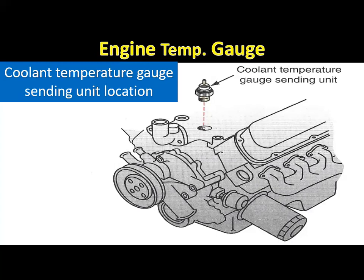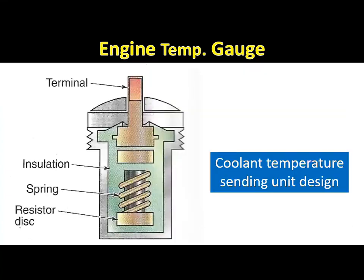The temperature sending unit is threaded into an opening in the cooling system, often mounted in the top of the intake manifold or in the cylinder head, with its lower end in contact with the engine coolant. The sending unit for most temperature gauges contains a resistor disc called a thermistor — a special resistor that changes resistance in relation to temperature. At low temperatures, the thermistor has high resistance, and as coolant temperature increases, the resistance decreases. This causes the balancing coil gauge to read hot or cool depending on the thermistor's resistance.